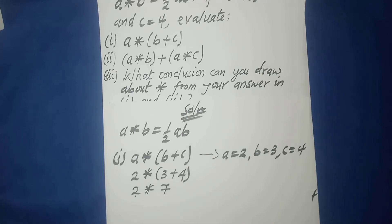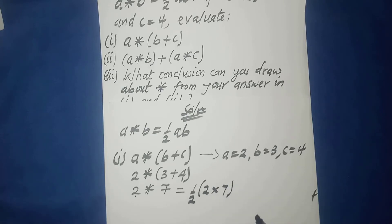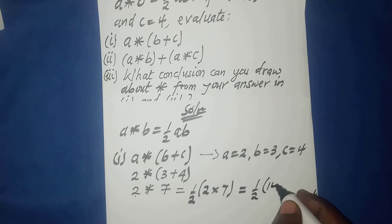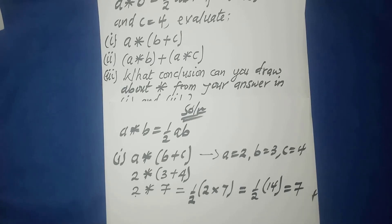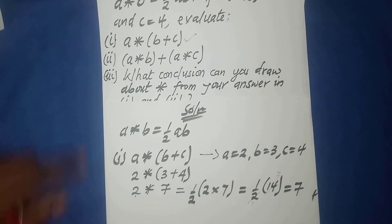Using the definition, two star seven equals one half times two times seven. One half of two times seven equals one half of fourteen, which equals seven. So our answer for part (i) is seven.